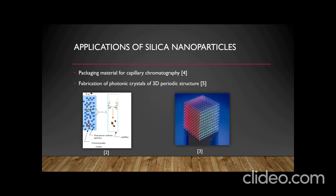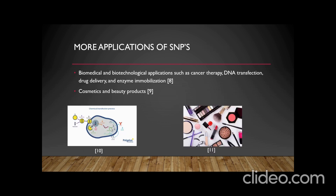Many research groups have applied monodispersed silica colloids as model material in various applications. For example, they have been used as packaging material for capillary chromatography. There have also been investigations on using these particles to fabricate photonic crystals of 3D periodic structure. The particles have also been used in the medical field — biomedical and biotechnological applications such as cancer therapy, DNA transfection, drug delivery, and enzyme immobilization have all benefited from these colloid particles. The product has also been used in cosmetics and beauty products.